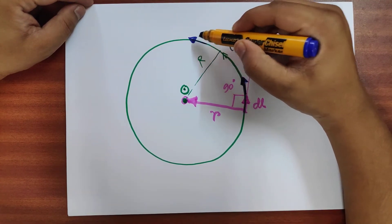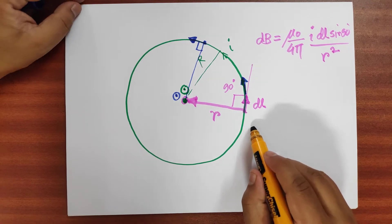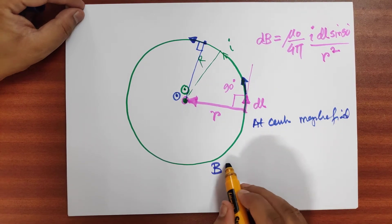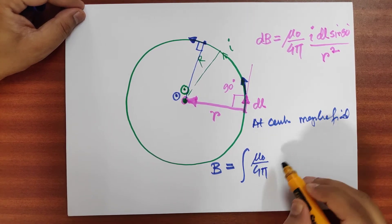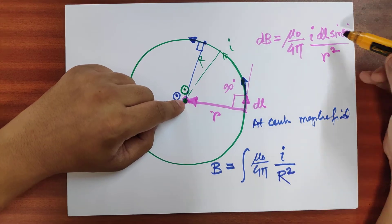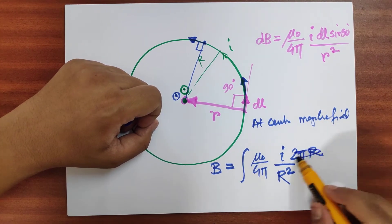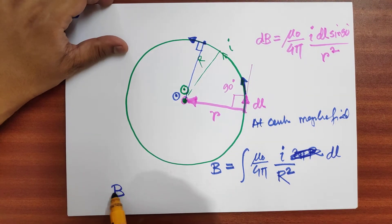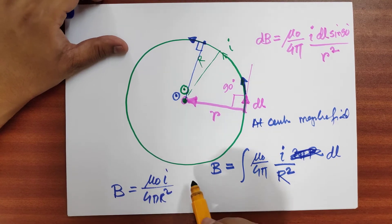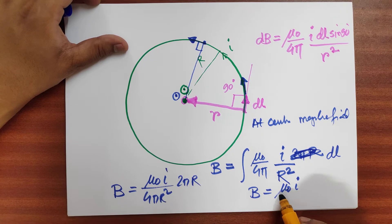Since the direction of the magnetic field doesn't change for any DL on the circumference, we simply integrate. B equals mu-0 by 4-pi times I divided by R squared, times the summation of DL. The summation of all DL around the circumference is 2-pi-R. So the magnetic field at the center equals mu-0 I divided by 2R.